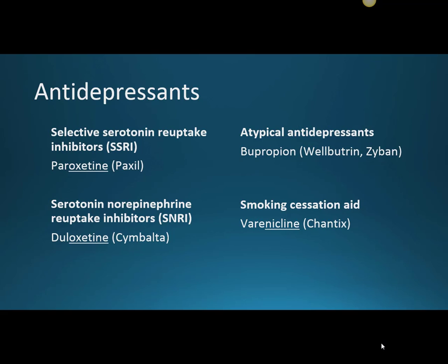The first is a selective serotonin reuptake inhibitor, or SSRI. The example we'll use today is paroxetine — brand name Paxil. As you recall from previous videos, selective serotonin reuptake inhibitors prevent the breakdown of serotonin to increase levels of serotonin in the brain to improve our mood.